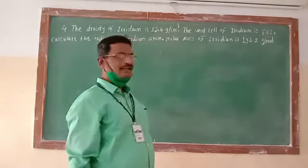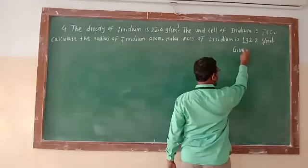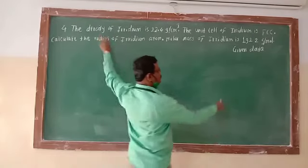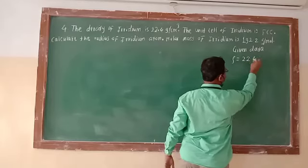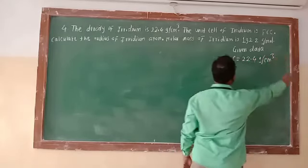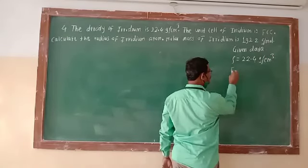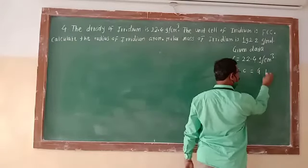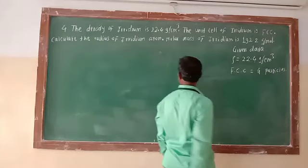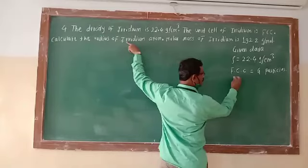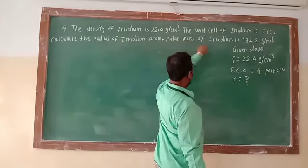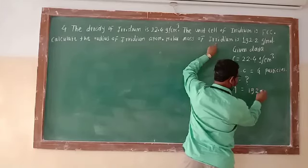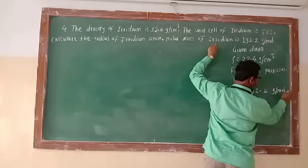While solving any problem, first we write the given data. Density rho is given as 22.4 gram per centimeter cube. The structure is FCC (face-centered cubic), so the number of particles present n equals 4. We have to calculate the radius R, and molar mass capital M is given as 192.2 gram per mole.